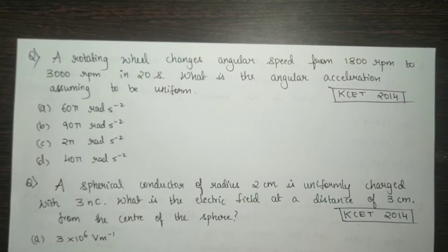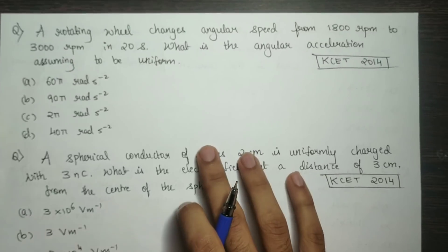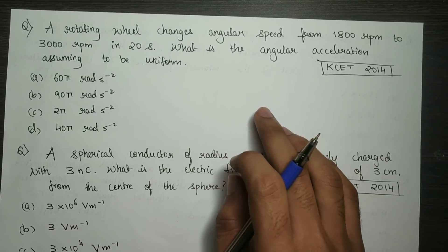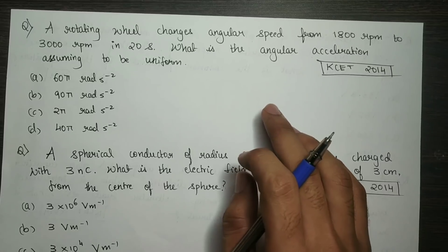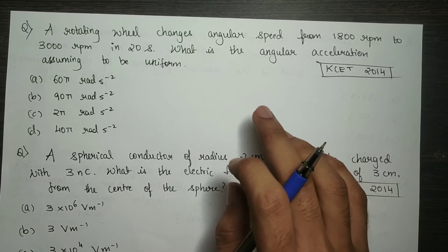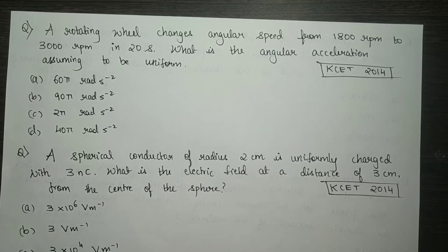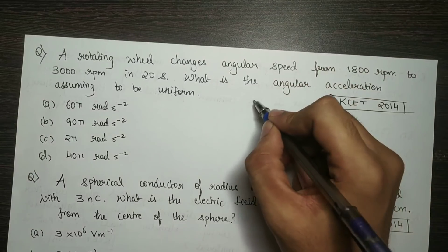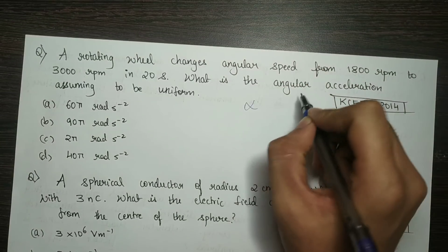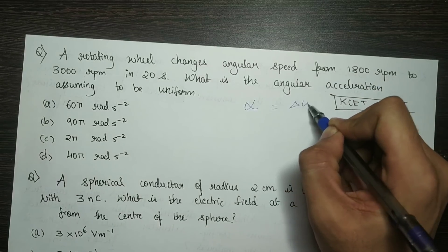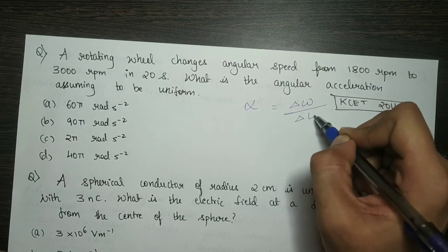So let's start with the question. The first question is: a rotating wheel changes its angular speed from 1800 rpm to 3000 rpm in 20 seconds. What is the angular acceleration, assuming it to be uniform? The angular acceleration symbol is alpha. Alpha is equal to change in angular speed divided by change in time.